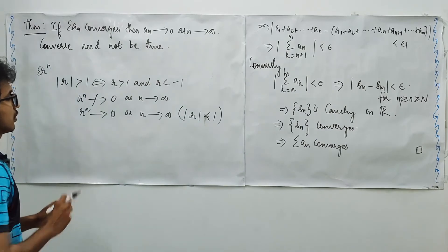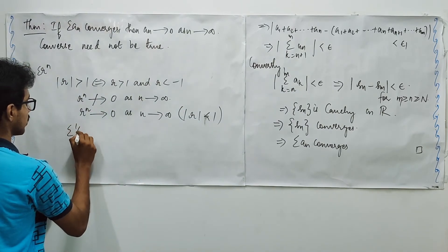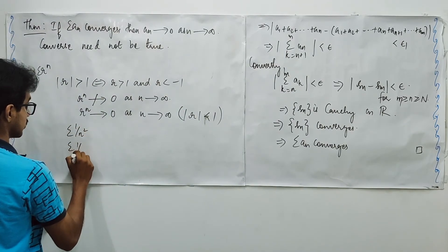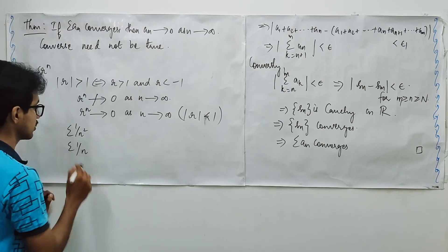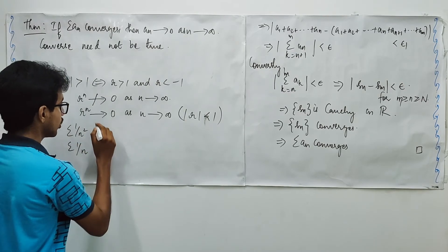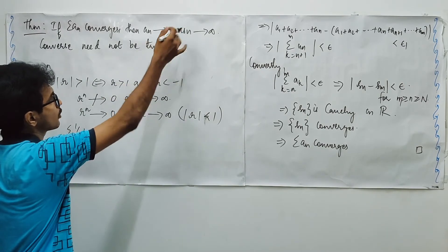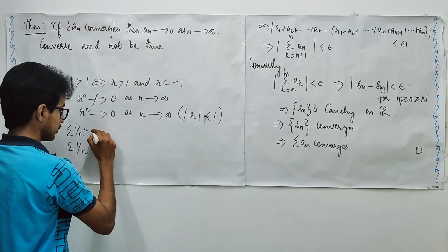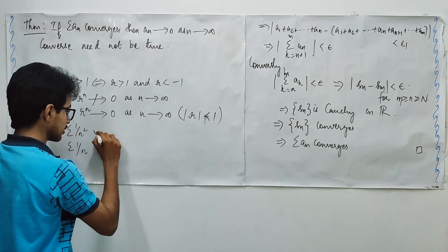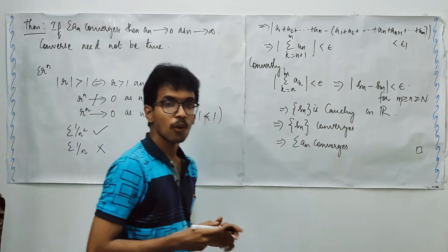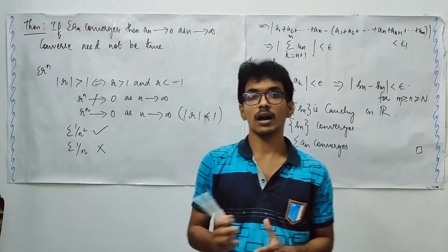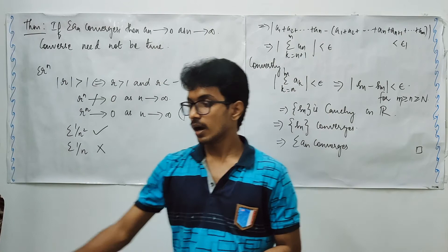And when you may take these two series, in these two series, your nth term approaches 0 as n approaches infinity, but this is not convergent, whereas this is convergent. Why? That we will see in the upcoming lecture.